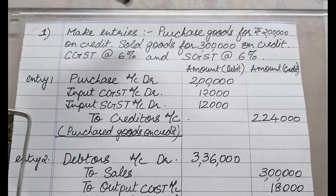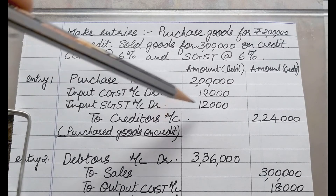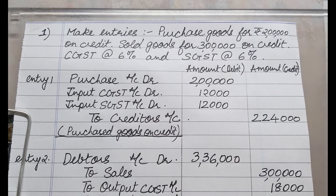So the entry for purchase goods for 2 lakh: first, purchase account debit 2 lakh. Then write input CGST account debit, input SGST account debit, and to creditors. Now calculate: on 2 lakh at 6% CGST — 2 lakh × 6 ÷ 100 = 12,000. So input CGST account debit is 12,000. Same way, 2 lakh × 6% = 12,000, so input SGST account debit is 12,000. So 2 lakh + 12,000 + 12,000 = 2 lakh 24,000. This is what you will be taking from creditors.